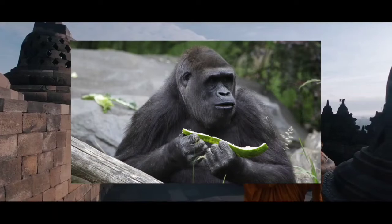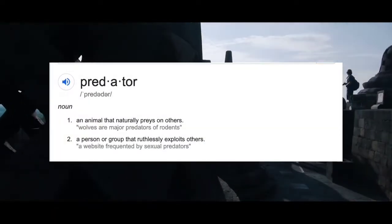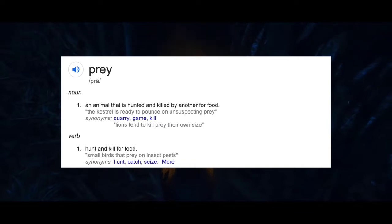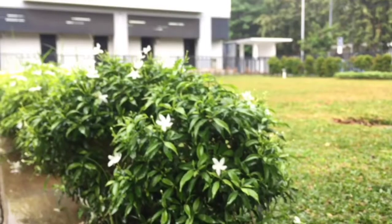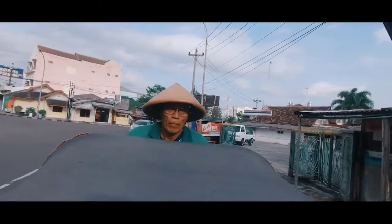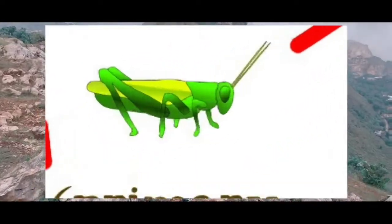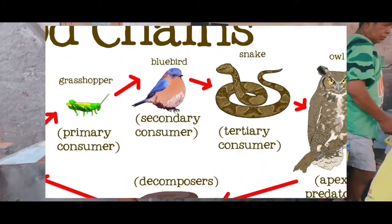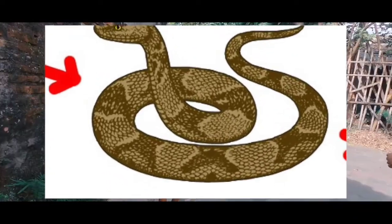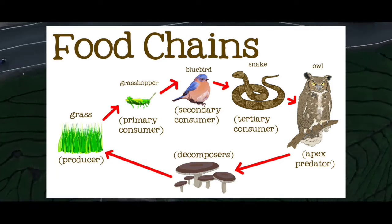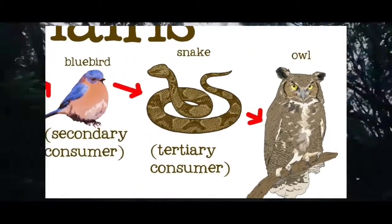Producers are organisms that produce food at the beginning of a food chain. Secondary consumers are animals that eat primary consumers, while tertiary consumers are animals that eat secondary consumers. Quaternary consumers are animals that eat the tertiary consumer, and the top carnivore is the animal at the end of the food chain.